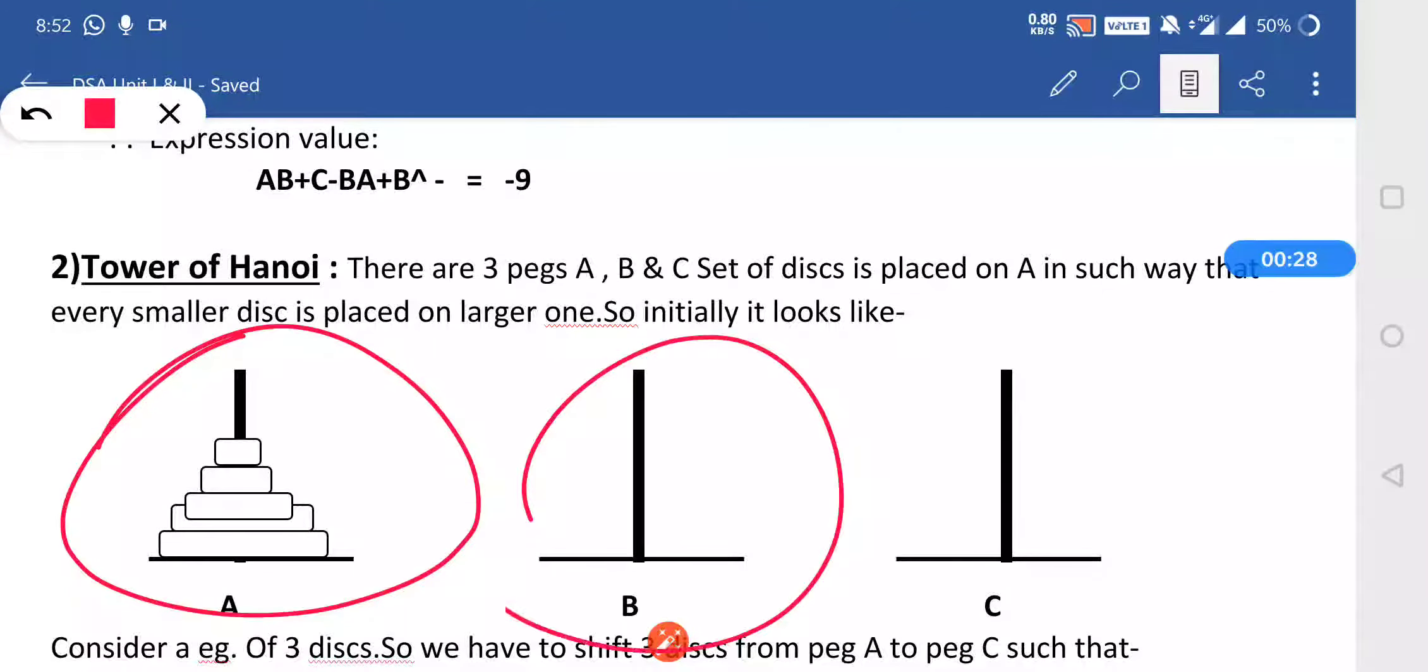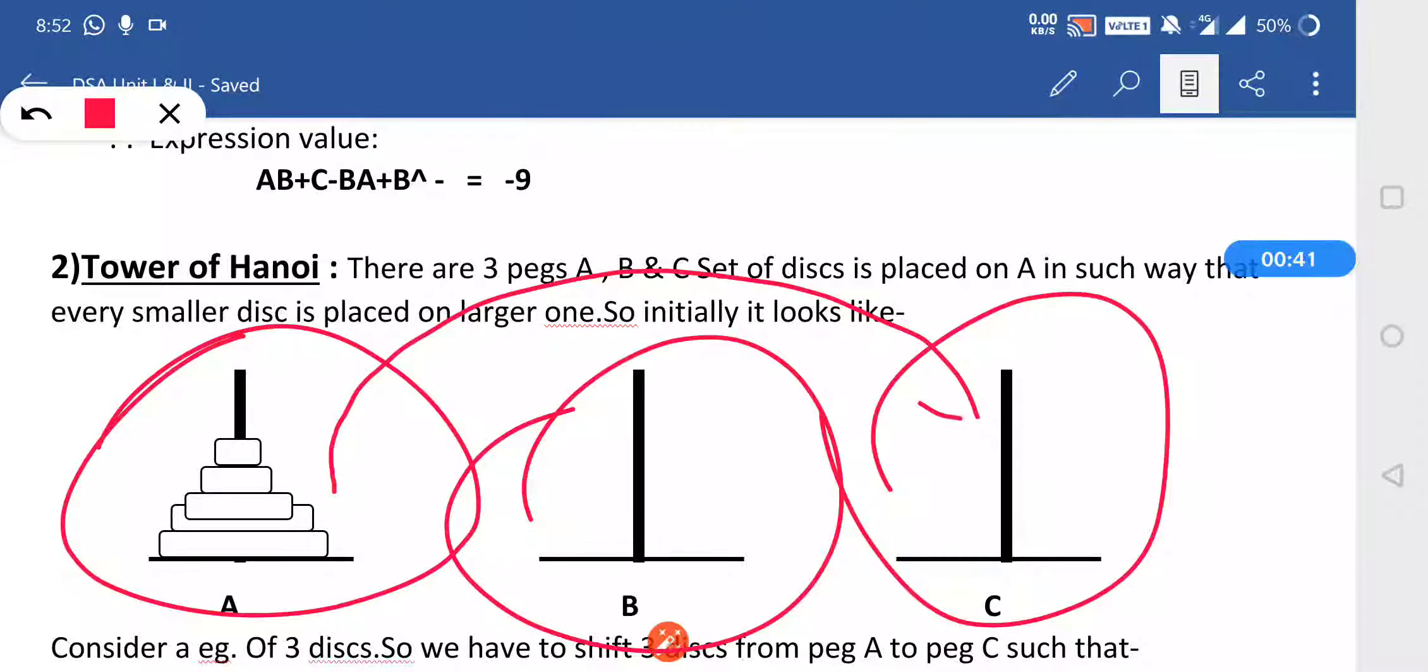That is peg A, peg B, and peg C. The three pegs are fixed and we have to do the transfer in such a way that we move all the disks from peg A to peg C.